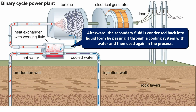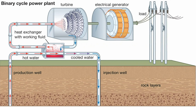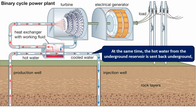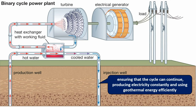The secondary fluid is then condensed back into liquid form by passing it through a cooling system with water, and then used again in the process. At the same time, the hot water from the underground reservoir is sent back underground, ensuring that the cycle can continue producing electricity constantly and using geothermal energy efficiently.